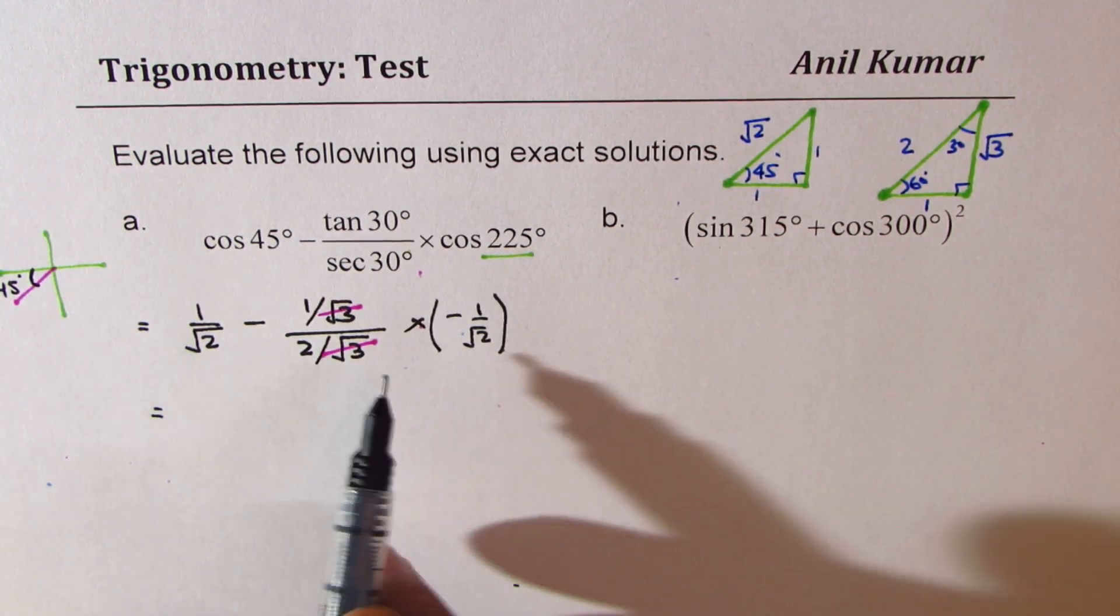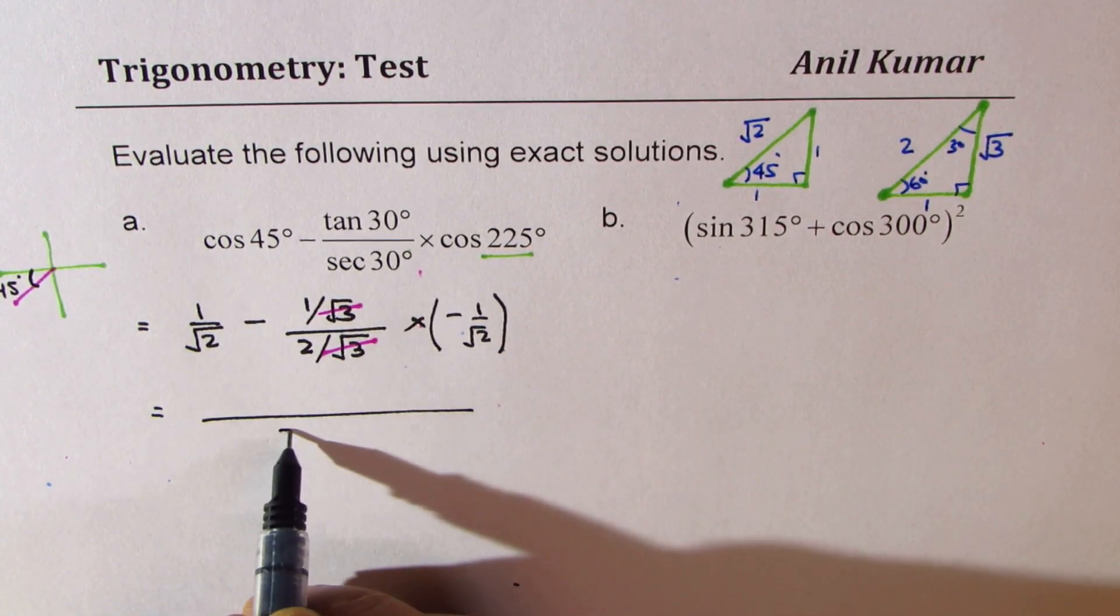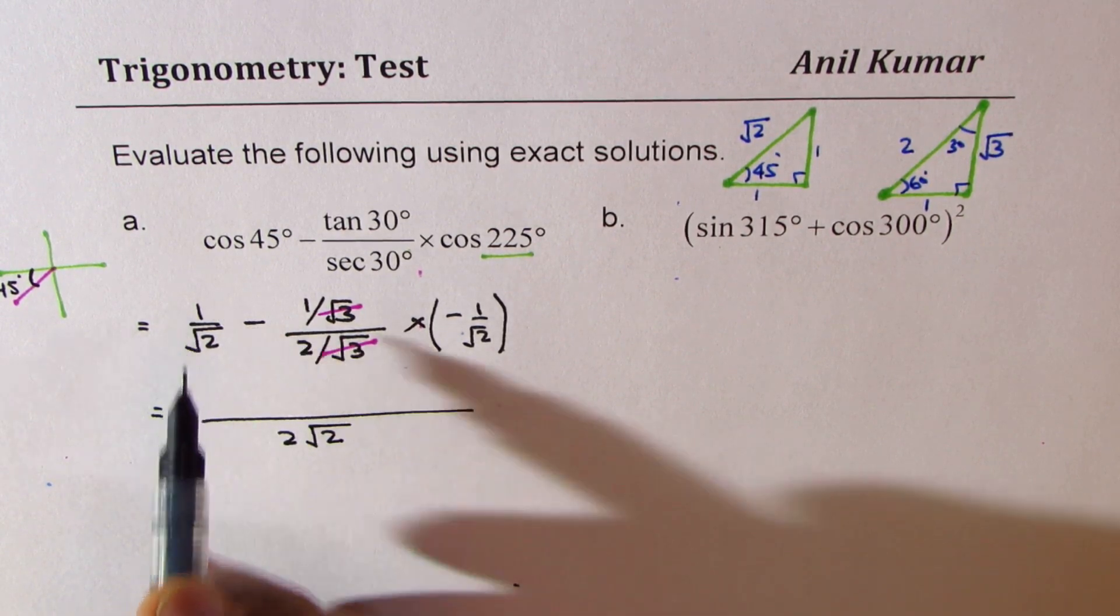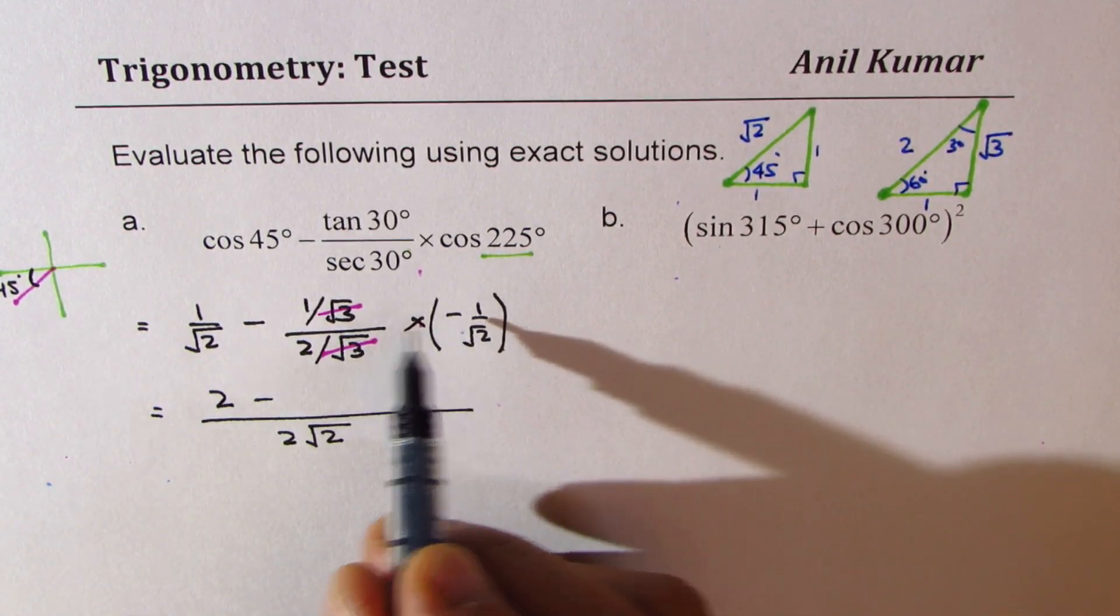We can take common denominator of 2 times square root 2. We get here 2 minus, minus and minus makes it plus, and 1 times 1 is 1.